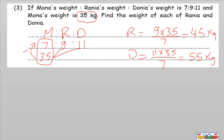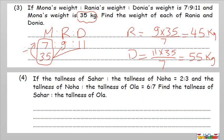Question number four: if the tallness of Sahar to Noha is two to three, and the tallness of Noha to Ula — the ratio between Noha and Ula is six to seven. So how can we combine these? Sahar to Noha is 2:3, and Noha to Ula is 6:7.